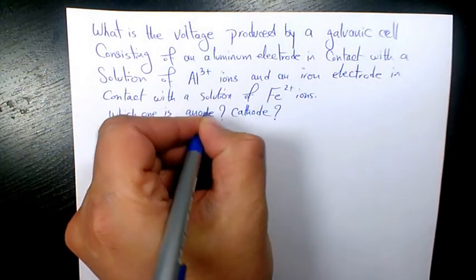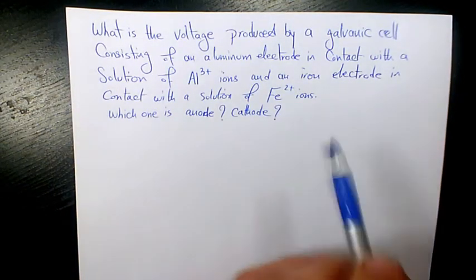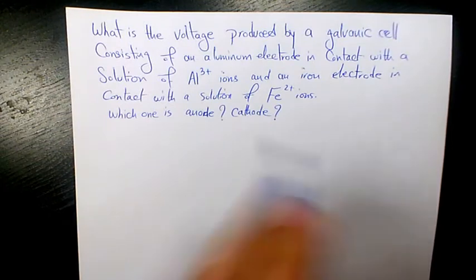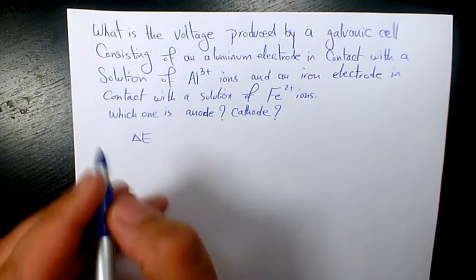So in order to figure out the standard cell potential to find out the voltage produced, we can use this formula.